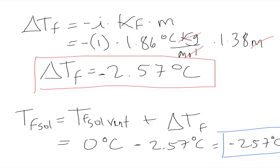In other instances you may see the ΔTf formula written as positive — that's fine, as long as you account for the negative when finding the new freezing point, since the freezing point decreases. As long as you understand that the boiling point increases and the freezing point decreases, the signs don't really matter. That is the final answer — thank you for watching, please like and subscribe for more videos.